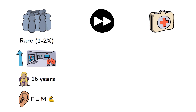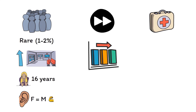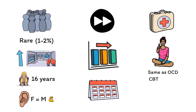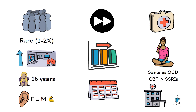Without treatment, body dysmorphic disorder tends to remain and become chronic, with less than 10% of people experiencing remission within one year. However, with treatment, patients can often do quite well and return to some semblance of normalcy. Treatment is the same as for OCD, with CBT being very helpful and serotonin-boosting medications being effective as well, though to a lesser extent than CBT. Because the core thought patterns of this disorder are ego-syntonic, it can sometimes be difficult to engage the patient in treatment.